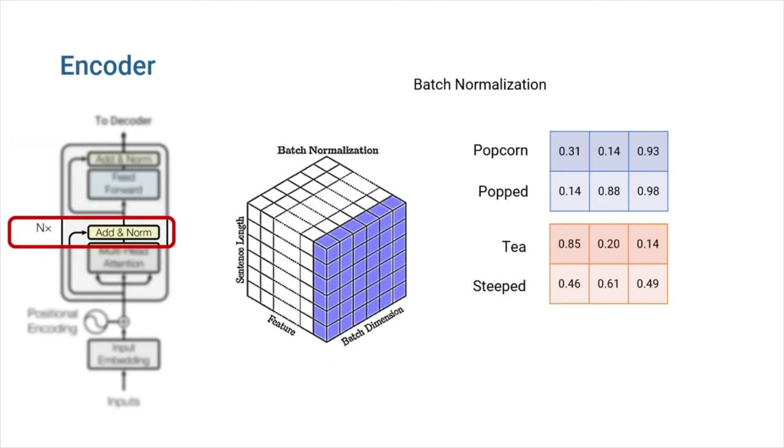For example, here we have a batch of two sentences, popcorn popped and tea steeped. You can see that each sentence is displayed by a matrix. Each row represents a word and contains the sum of input embeddings and the output of attention layer. In batch norm, we take one feature and calculate the average and variance of it, and then normalize the data so that the average is near zero and variance is about one. Of course, we should repeat this for other features as well.